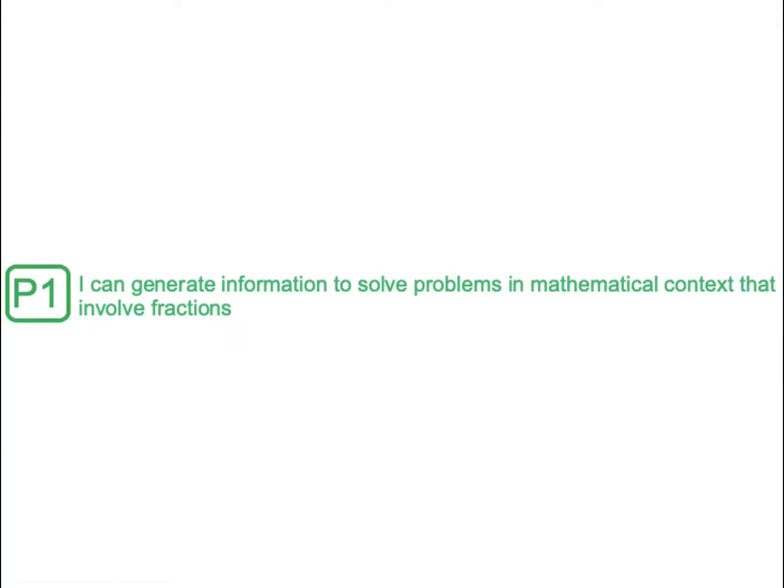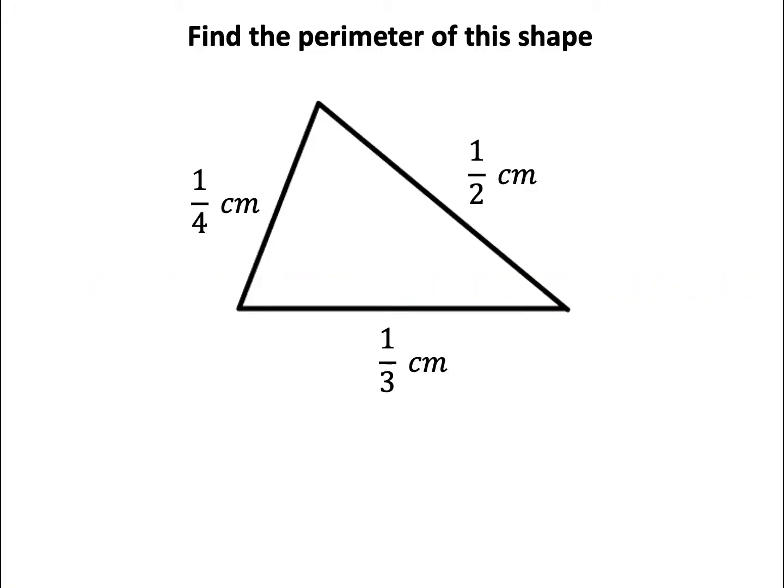This video will cover how we can apply what we've learnt throughout this topic to solve mathematical problems. How do we find the perimeter of a shape? The perimeter is the distance around a two-dimensional shape, so the sum of all the lengths on a two-dimensional shape will tell us the perimeter.